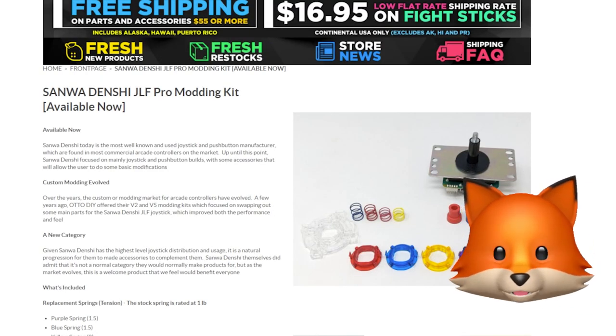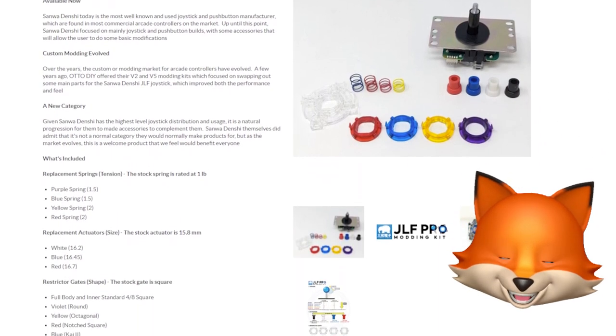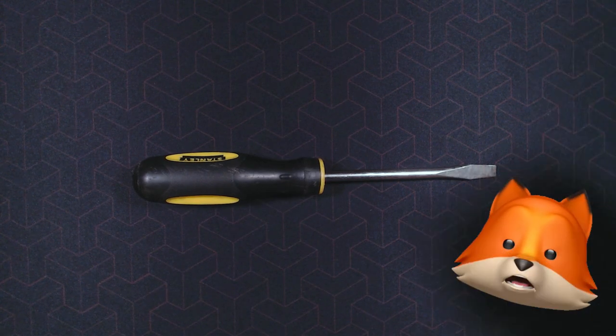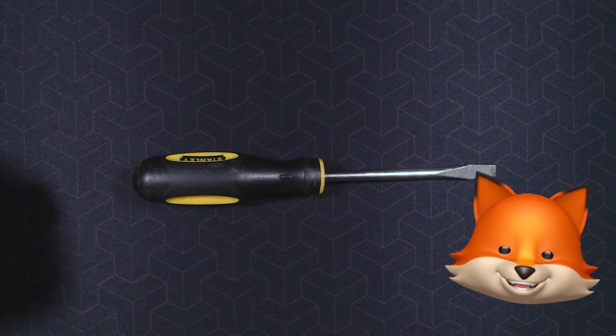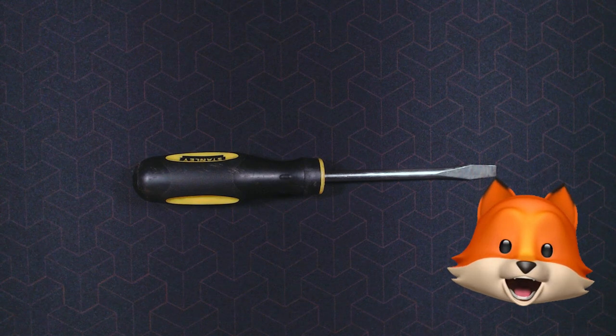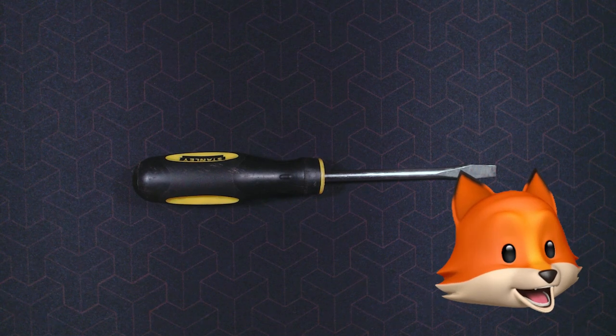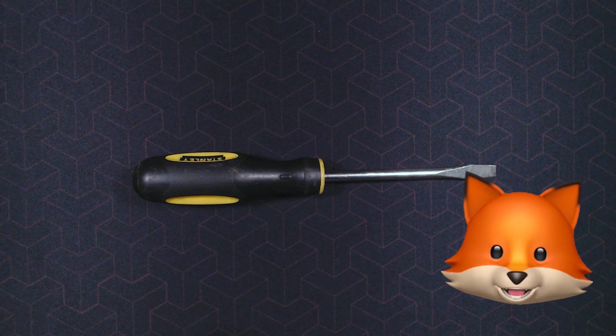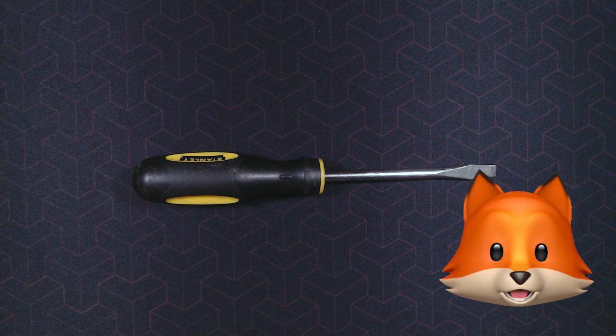Now as of filming this video the JLF modding kit is currently available on the Arcade Shock website for $27.99. The link will be in the description box below. The only tool that we are going to need today is going to be a flathead screwdriver. Now you can actually do this mod with the joystick inside your case or you can do it extracted. Either one, whatever floats your boat. Just make sure the shaft doesn't fall on the floor.